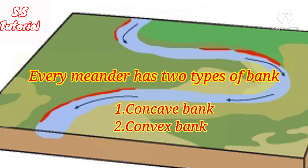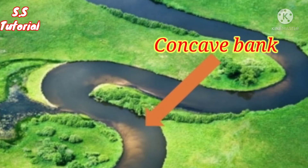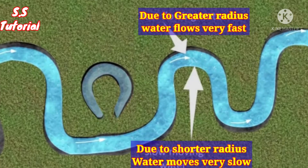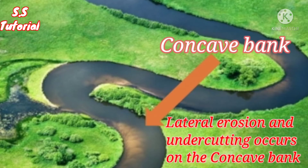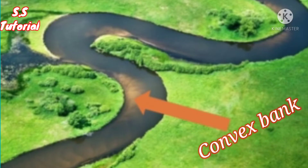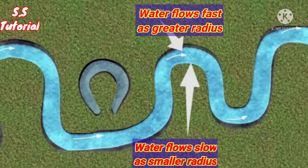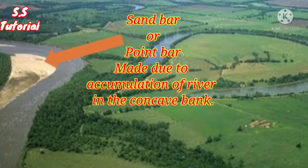Every meander which forms an Oxbow Lake has a greater curve with two types of bank: the concave bank and the convex bank. The part of the curve with a greater radius is known as the concave bank, where the velocity of water is higher as water flows a greater distance. Due to this high velocity, lateral erosion and undercutting occur on the concave bank. The part with a smaller radius is known as the convex bank, where river velocity is lower. Due to the lower velocity, transported materials are accumulated on the convex bank, forming a sand bar known as a point bar.